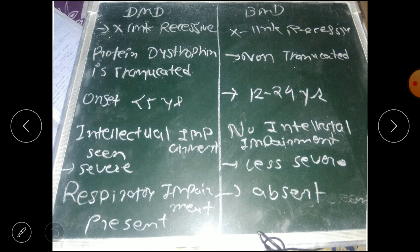also X-linked recessive. Both dystrophies are X-linked recessive. Next, we discuss the protein dystrophin, which is truncated in DMD, and in BMD it is non-truncated or normal. Now truncated means what? It is prematurely cut.